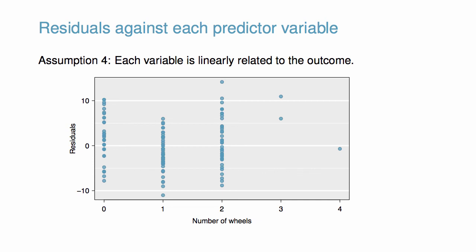Turning our attention to the residuals against the wheels variable, we see some possible structure. There appears to be curvature in the residuals, indicating the relationship is probably not linear.